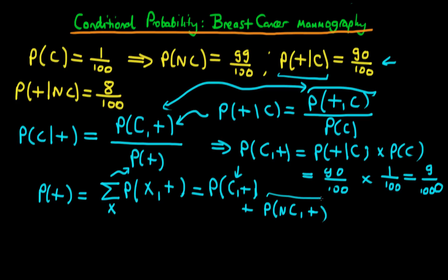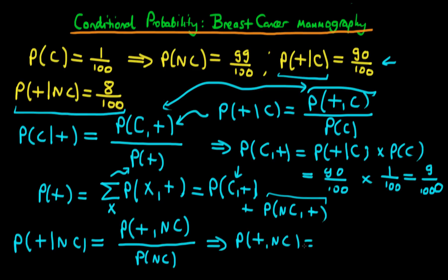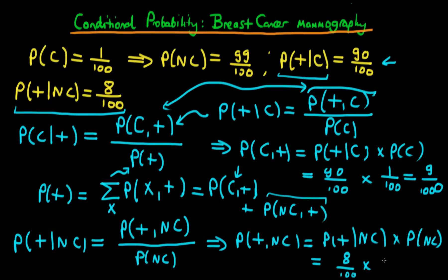For the second part, we use the remaining information. P(positive | no cancer) equals the joint probability of testing positive and not having cancer, divided by P(no cancer). Rearranging, P(positive and no cancer) equals P(positive | no cancer) times P(no cancer). Both are known: 8 over 100 times 99 over 100, which comes out to 792 over 10,000.